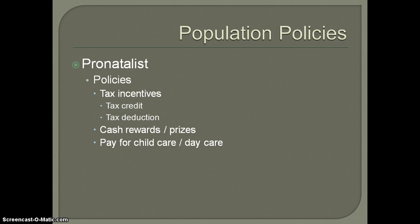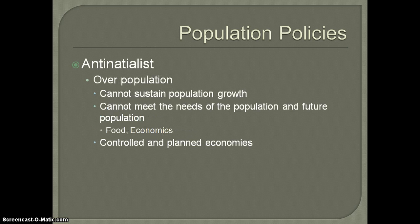Another thing I've seen recently, put out by the Population Reference Bureau, was about Germany. The German government was making efforts to pay families who were having to pay for child care. It's not just a tax break or tax credit — it's actually the government paying for child care for a certain number of days. Again, trying to take care of those things that might make children more costly. It's really going to depend on which country you look at around the world in terms of what policies they're putting into place.